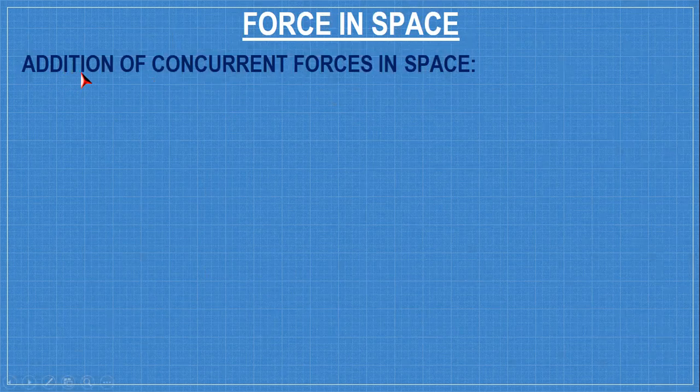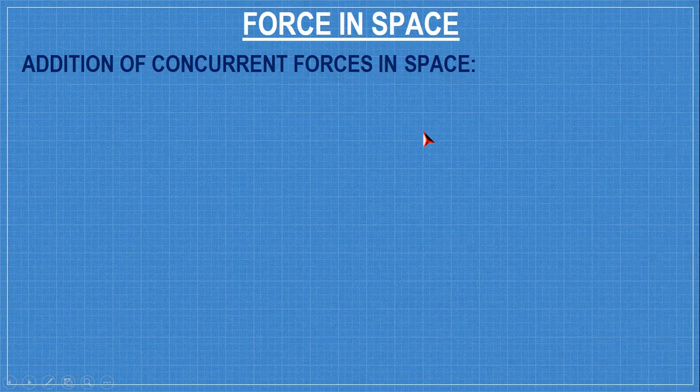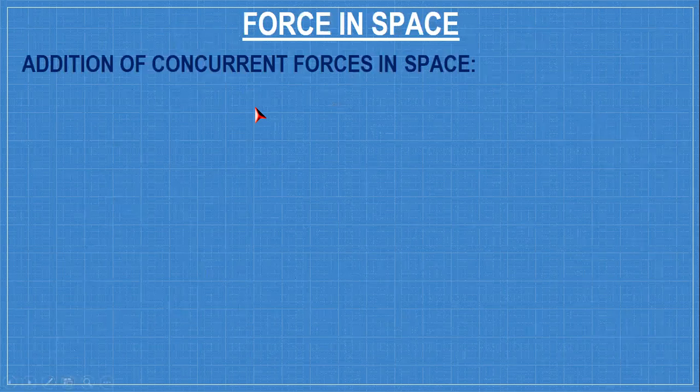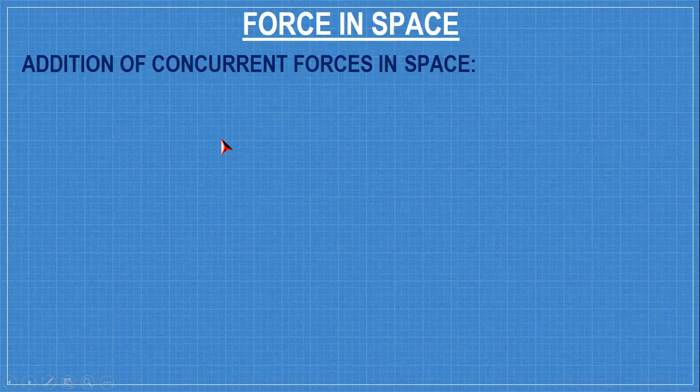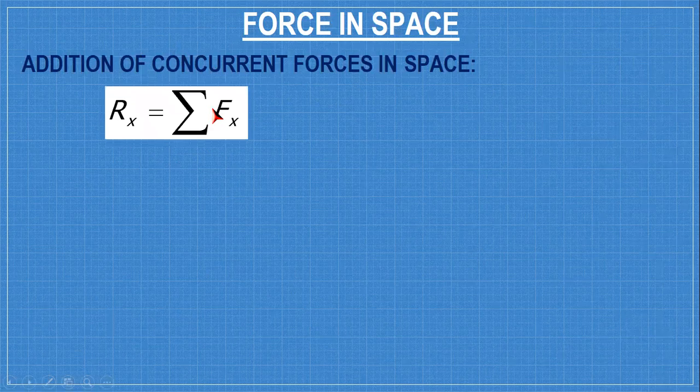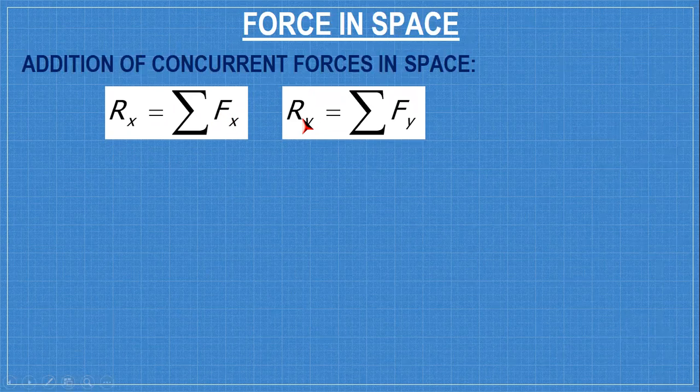I'm going to discuss how to add concurrent forces in space. So in order to add concurrent forces in space, we are going to use the conditions used in two dimensions, x and y plane. Let's recall that Rx is the sum of all x components, while Ry is the sum of all y components.